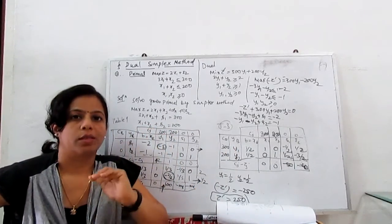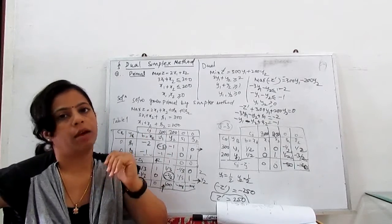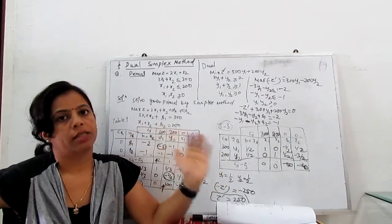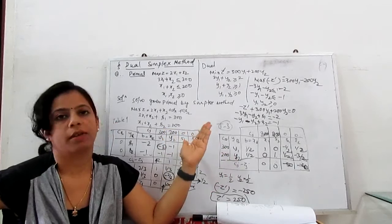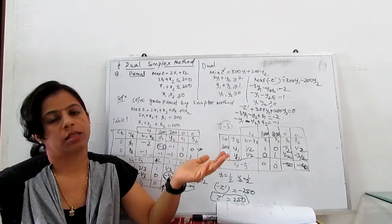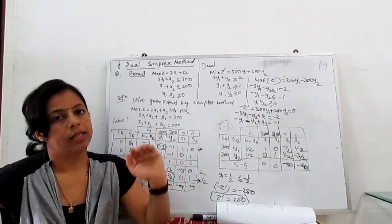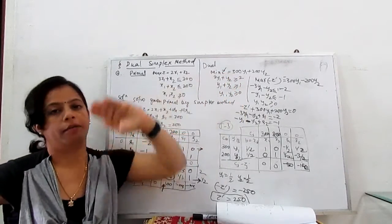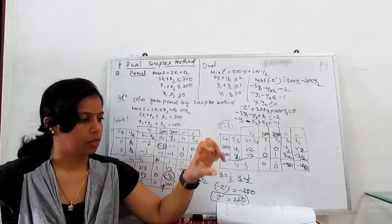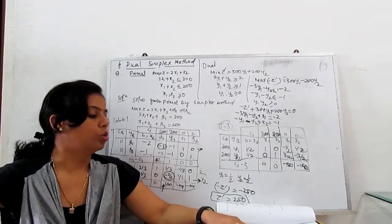What is the use of the dual? Sometimes if a problem has an infeasible solution, we can't solve with the primal because the primal starts with a feasible solution. So we use the dual instead. Also, if there are many constraints, converting to dual can result in fewer equations and therefore less calculation, making it easier to solve.